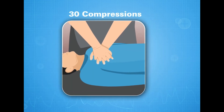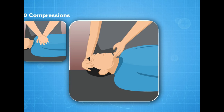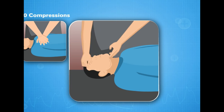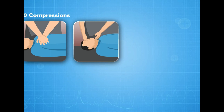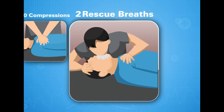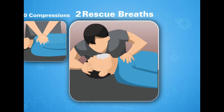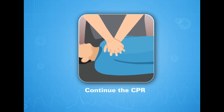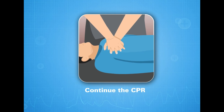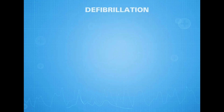After the 30 compressions, open the airway by lifting the chin and tilting the casualty's head backwards. Pinch the nostrils to close the nose and open the mouth with the help of the chin to give two rescue breaths. The two breaths should not take more than five seconds. Continue CPR until the casualty wakes up or advanced medical aid arrives.